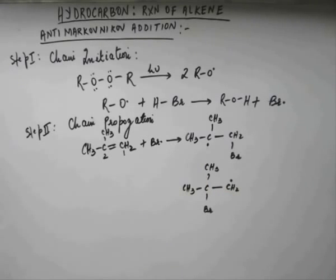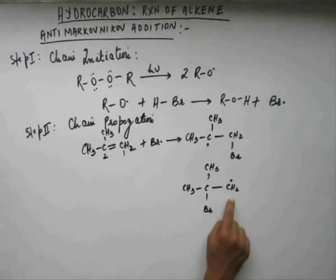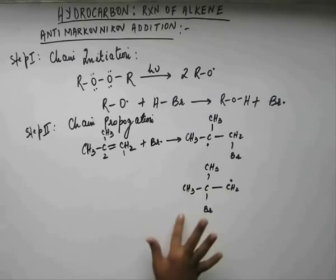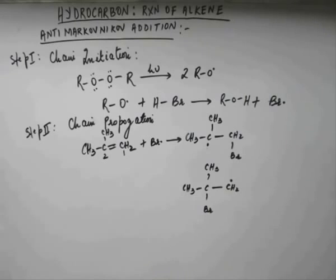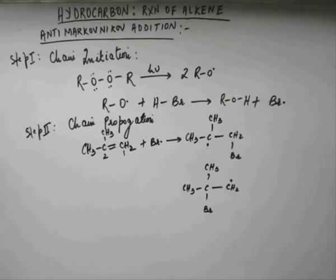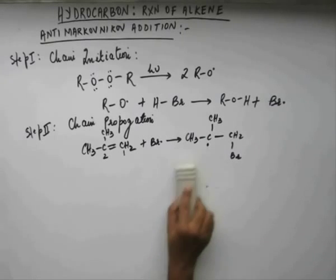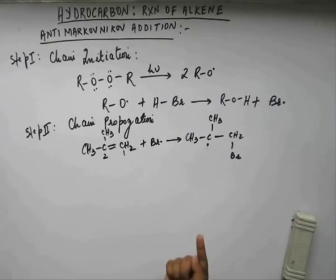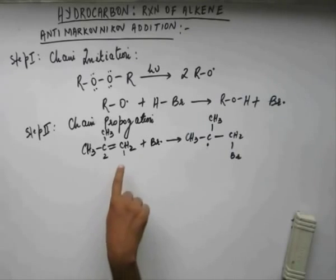A free radical is electron deficient like a carbocation — a carbocation is deficient of 2 electrons, while a free radical is deficient of 1 electron. Both are stabilized by the same effects: resonance, plus-M effect, and hyperconjugation. Because the free radical is also electron deficient, hyperconjugation stabilizes it too. We assess the stability of a free radical in the same way as a carbocation — the extent of hyperconjugation is proportional to stability. Based on this, the free radical on C2 is more stable, so Br· attaches to C1.